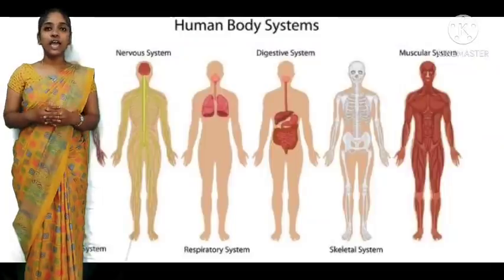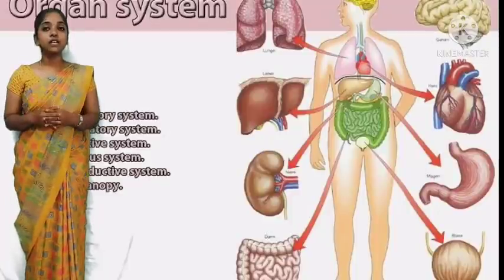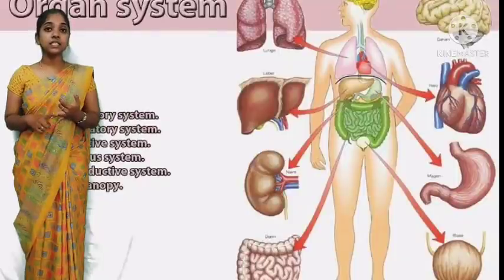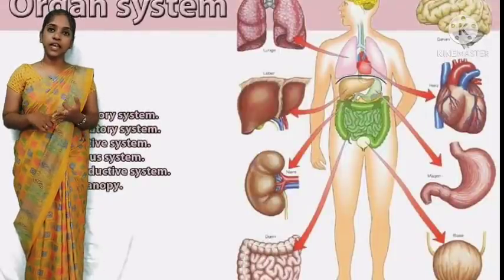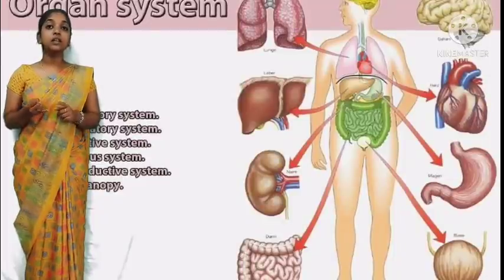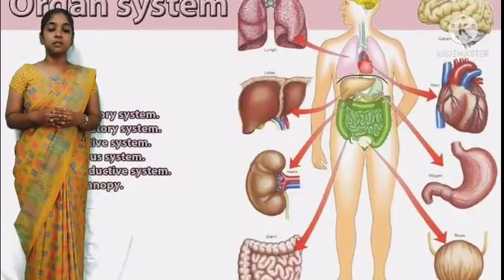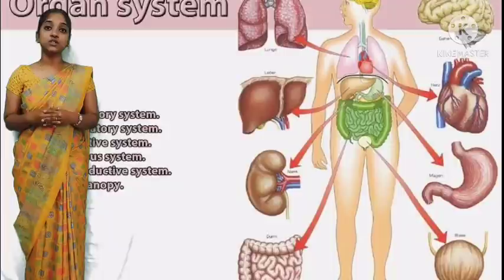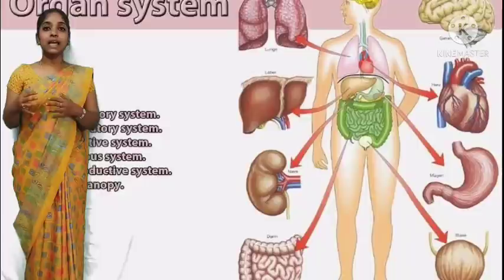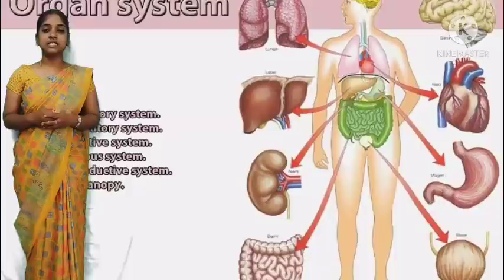There are many organ systems. The different organ systems are: respiratory system, digestive system, circulatory system, skeleton system, muscular system, nervous system, excretory system, and reproductive system. In today's class, we are going to learn particularly about the excretory system and circulatory system. First, let me tell you about the circulatory system.